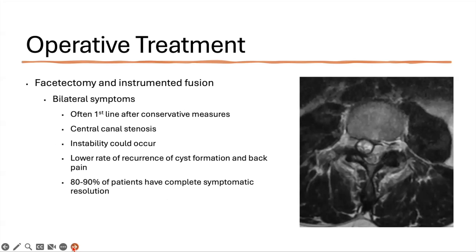For bilateral symptoms or when laminectomy doesn't work well, you're looking at performing a facetectomy and an instrumented fusion. After conservative measures, many surgeons choose to go directly to this approach. Instability is the main reason why instrumentation is placed within the spine. There is a lower rate of cyst recurrence, and fortunately 80 to 90% of patients will have complete resolution of their symptoms with this approach.